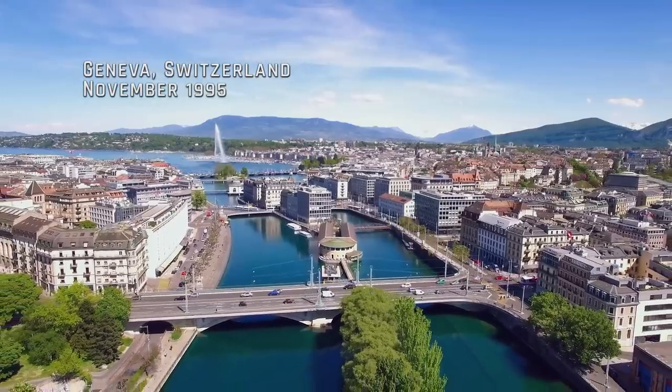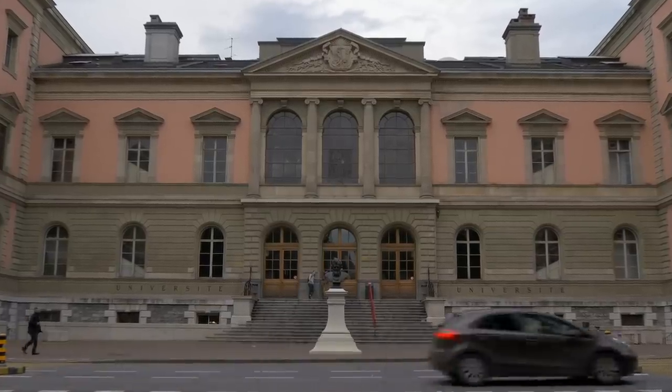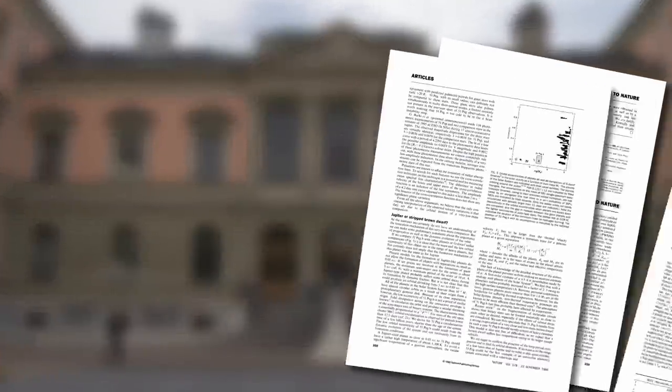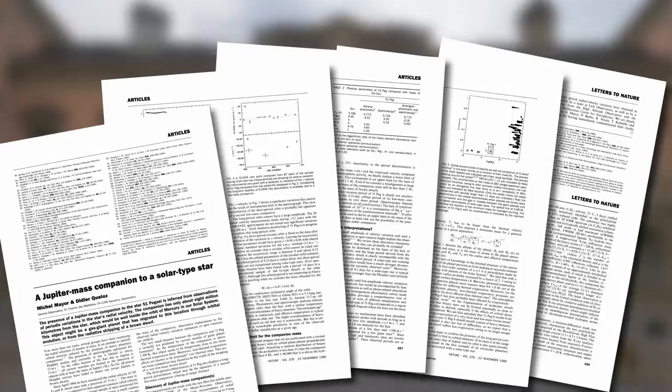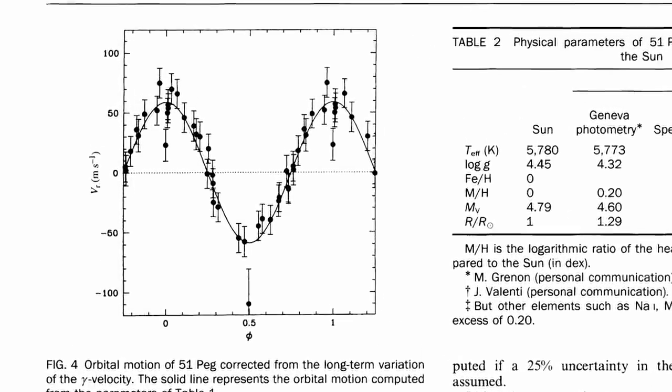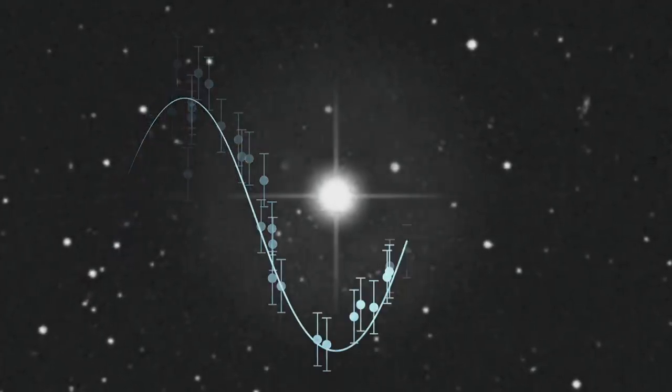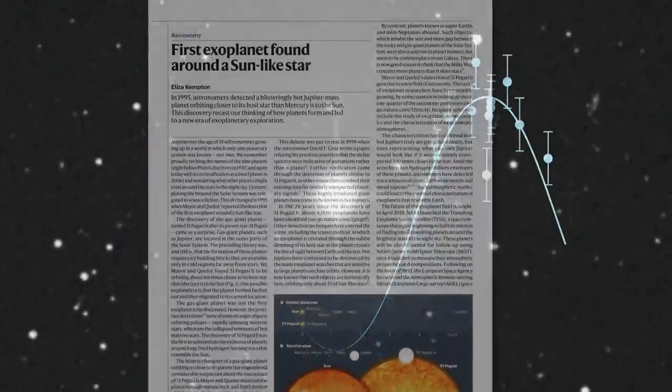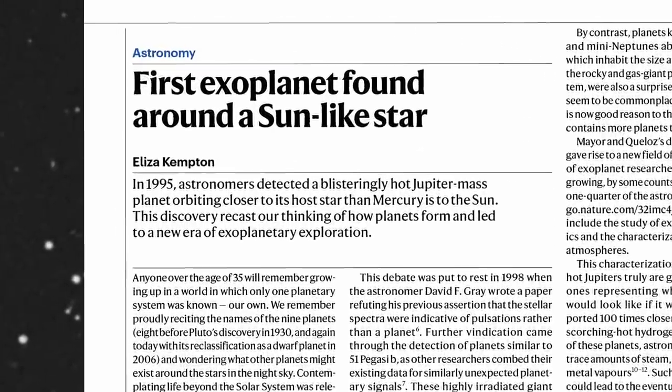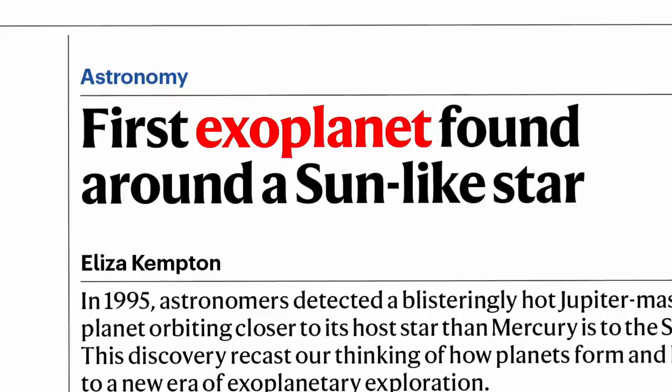Geneva, Switzerland, November 1995. Astronomers from the University of Geneva announce an incredible discovery in the pages of the journal Nature. They reveal that by analyzing slight changes in the light generated by the distant star known as 51 Pegasi, they were able to confirm the existence of an exoplanet around another star in our galaxy for the very first time.